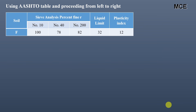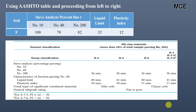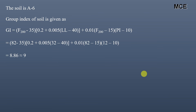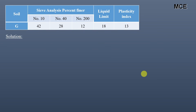Using the AASHTO classification table and proceeding from left to right: the liquid limit is 32 and plasticity index is 12. For A-4 the maximum plasticity index is 10, ruling out A-4. For A-5 the minimum liquid limit is 41, ruling out A-5. For A-6 the maximum liquid limit is 40 and minimum plasticity index is 11, and our soil matches these characteristics. The soil is A-6. The group index is 8.86, rounded to 9, so the classification is A-6(9).